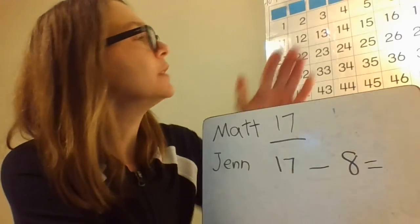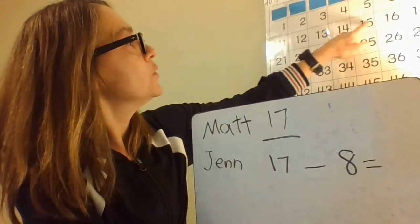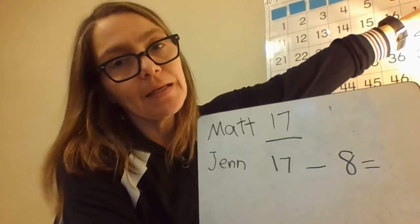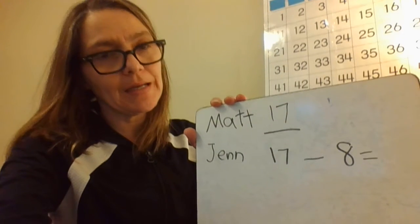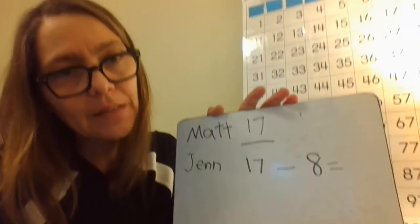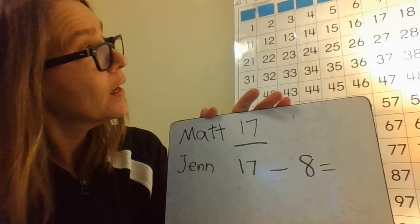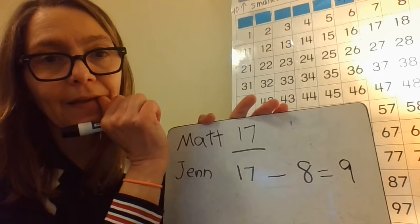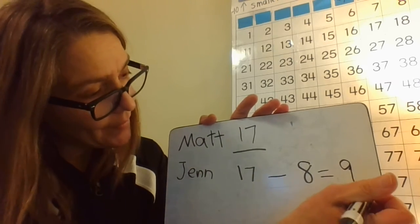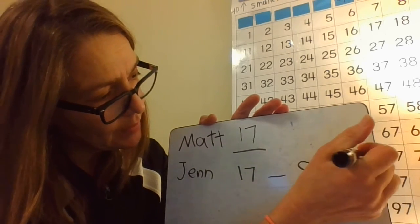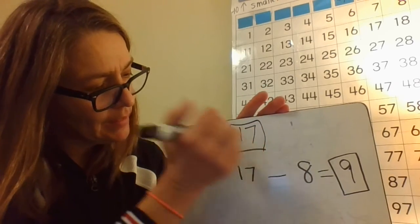I'm going to count back using my number grid: 17, then count back 1, 2, 3, 4, 5, 6, 7, 8 — and I got to 9. You can work along using your own number grid. Now I know that Jen sold 9 tickets and Matt sold 17.